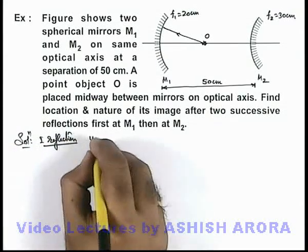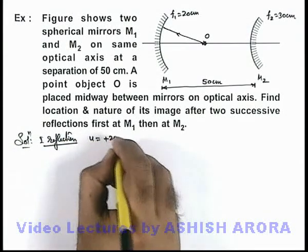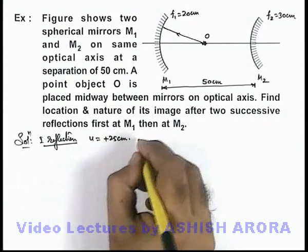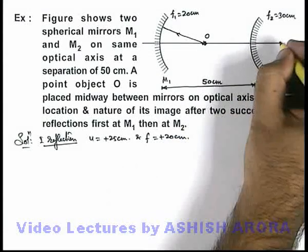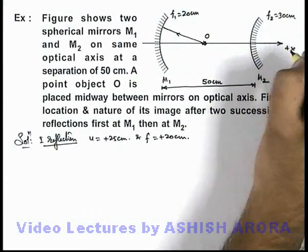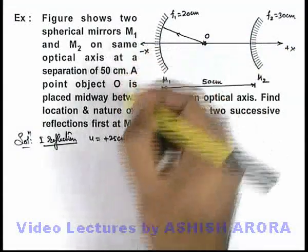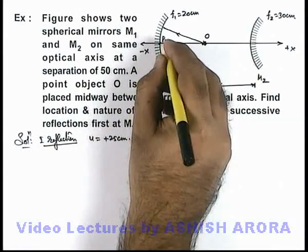Here we take u is equal to plus 25 centimeters, and focal length we can take as plus 20 centimeters, because here we are taking right side as plus x-axis and left side as minus x-axis, and this is the pole P1.